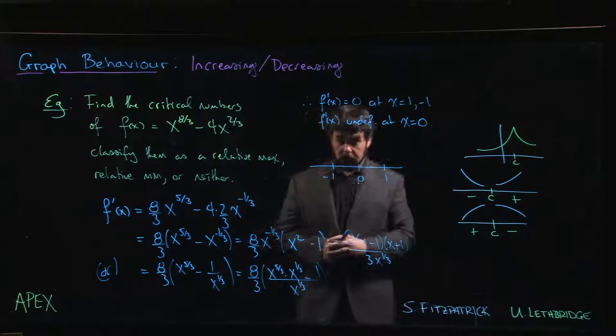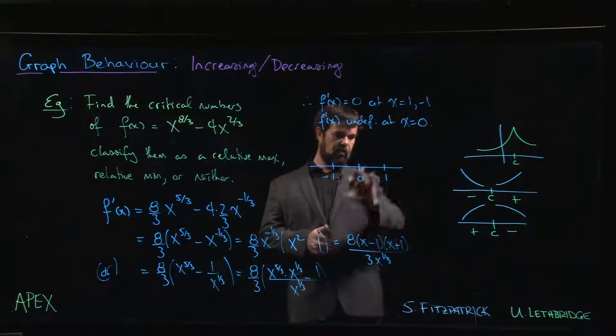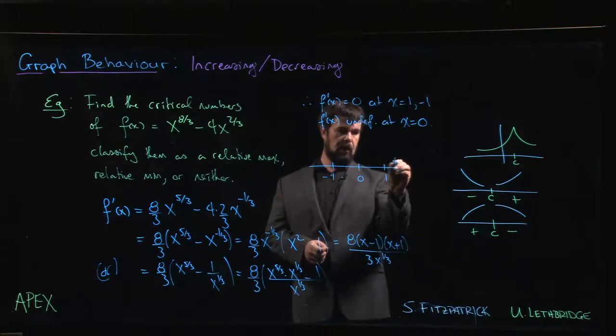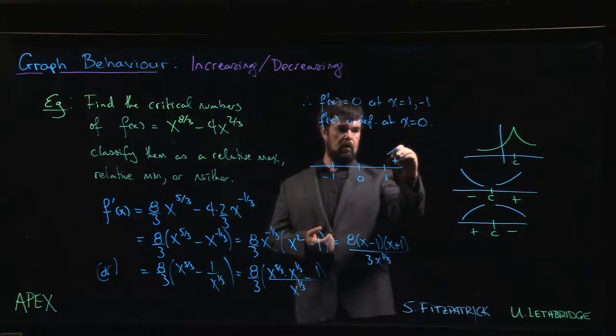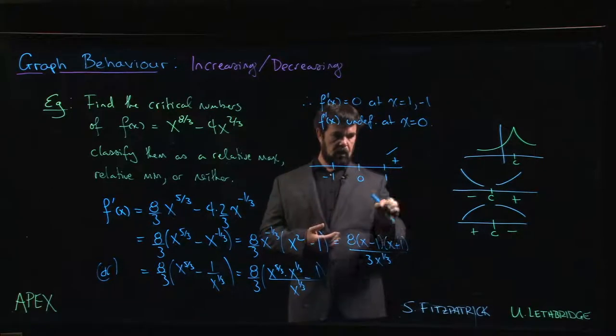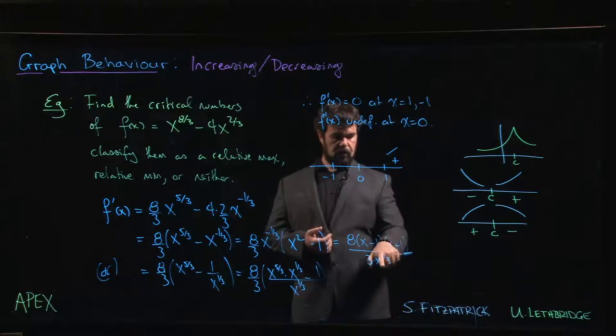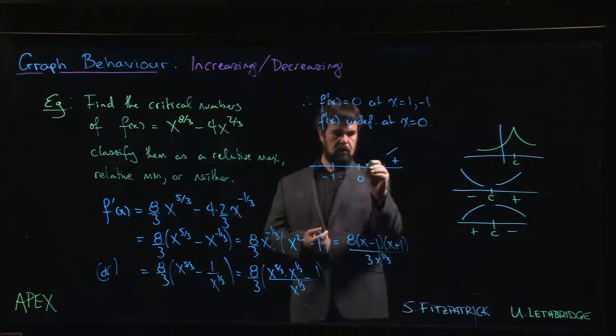Now we have to work out the sign in each interval. If x is bigger than 1: plus, plus, plus - everything is positive, so we're increasing. Between 0 and 1: negative, positive, positive - overall negative, and we're decreasing.